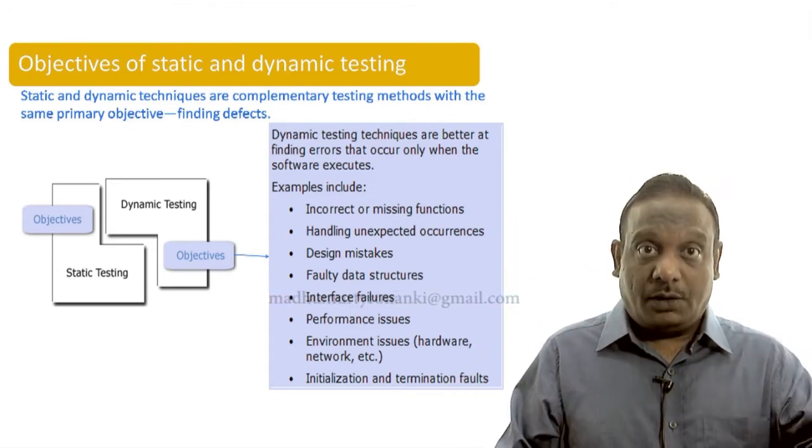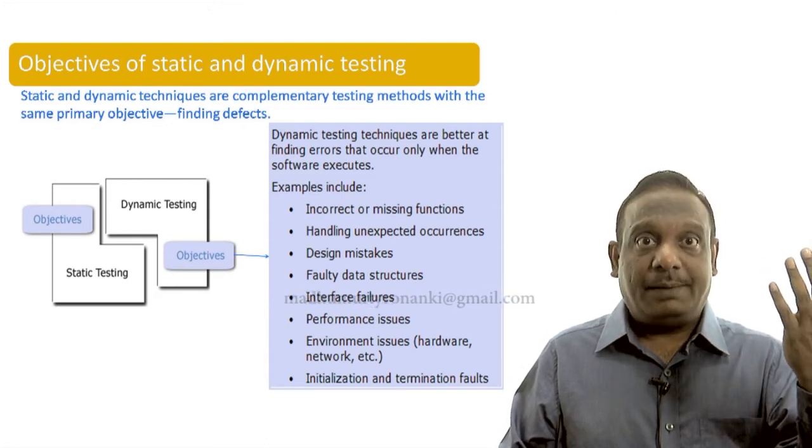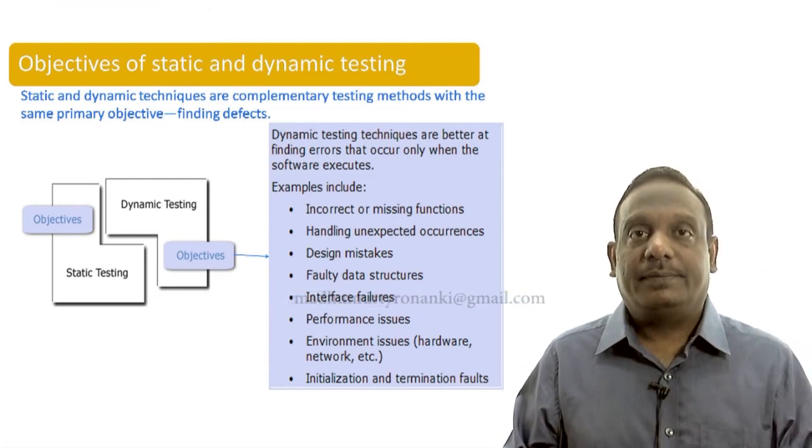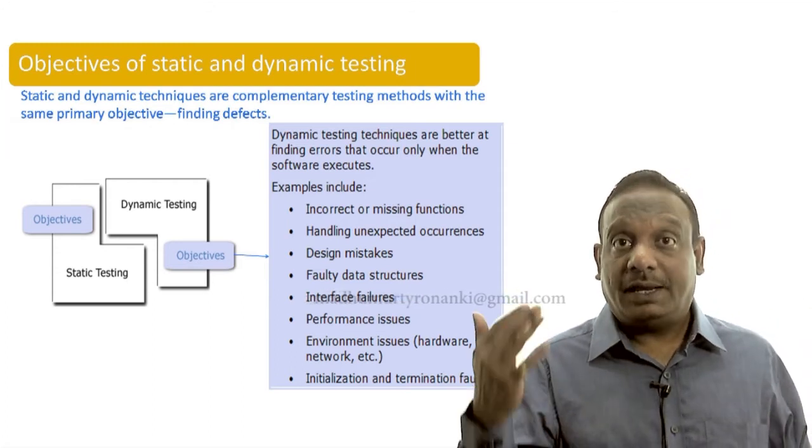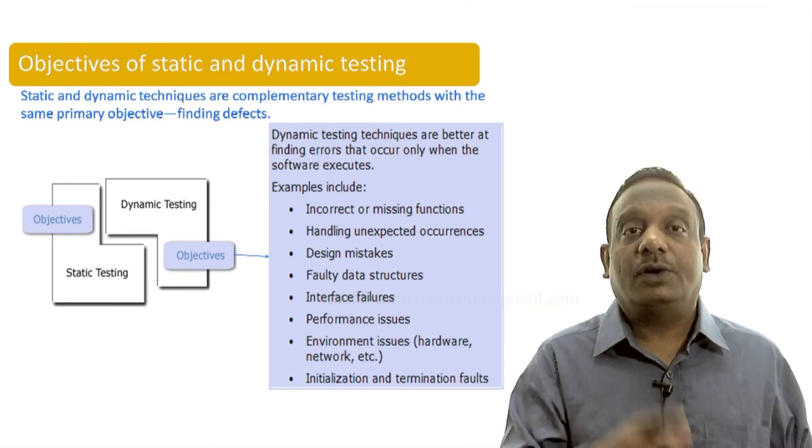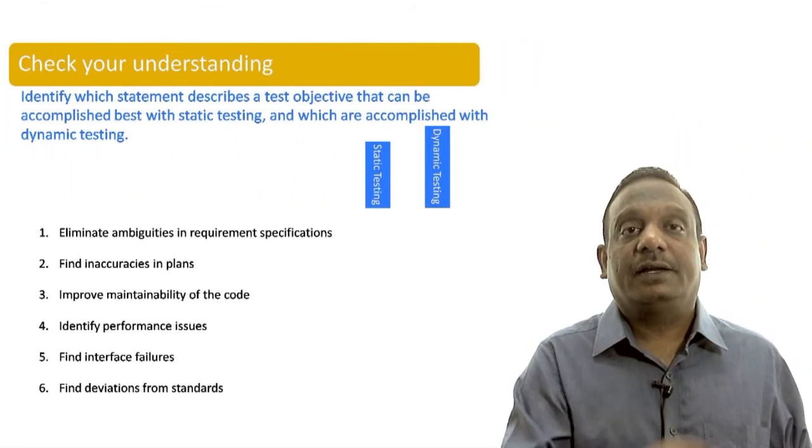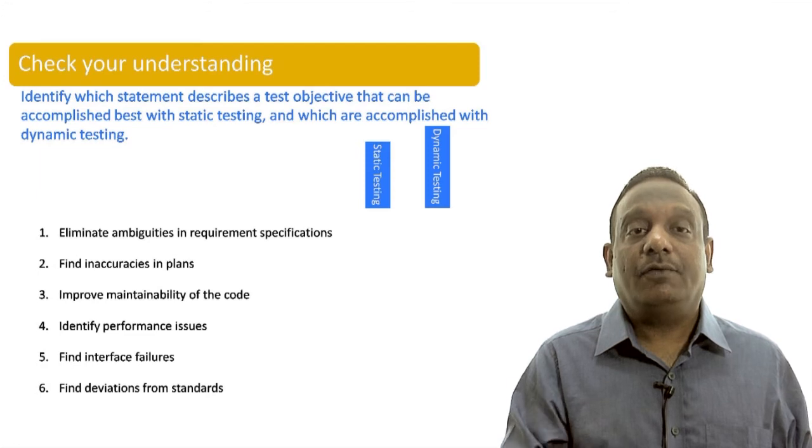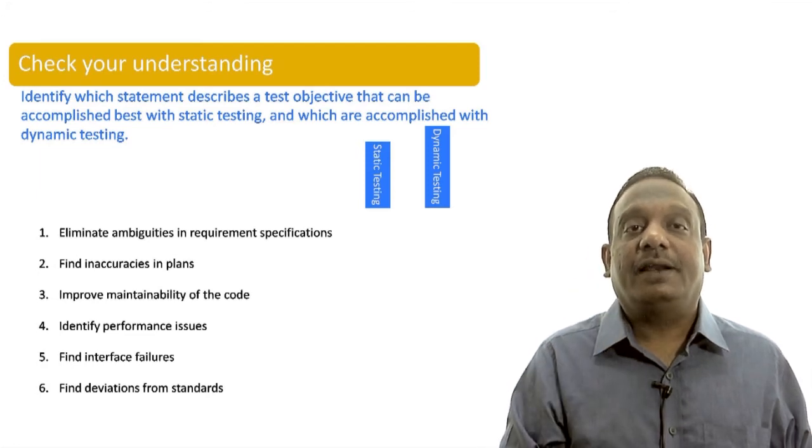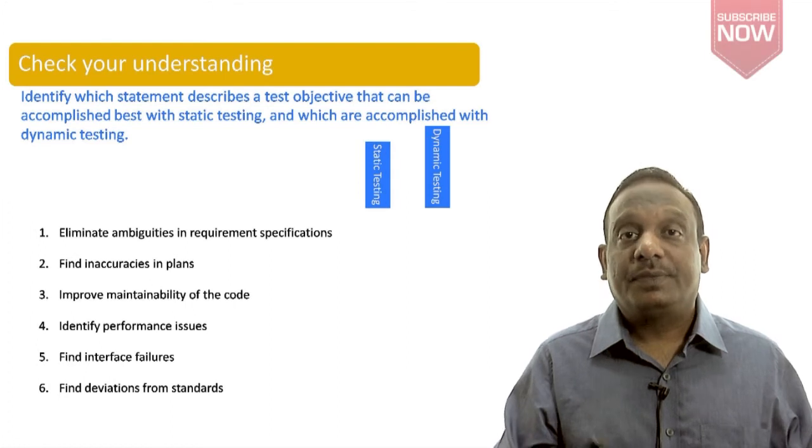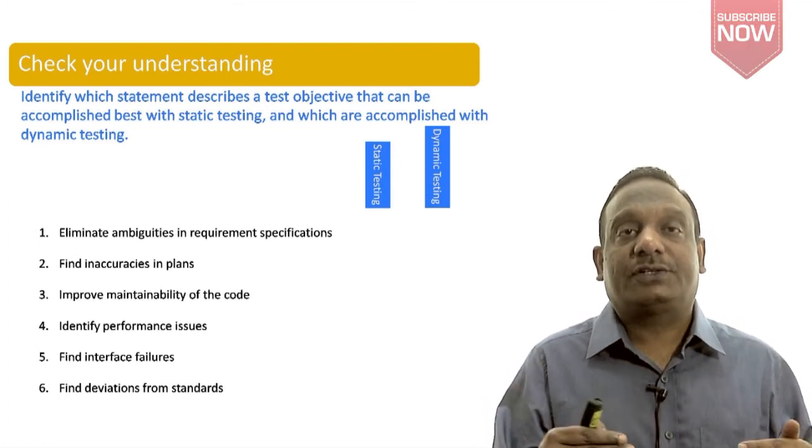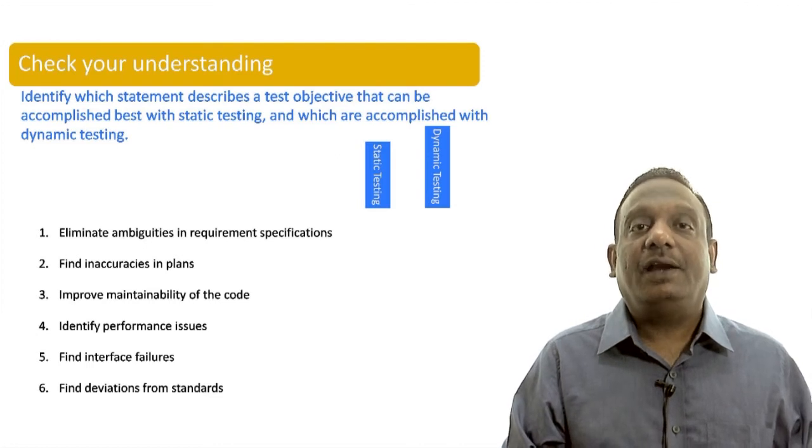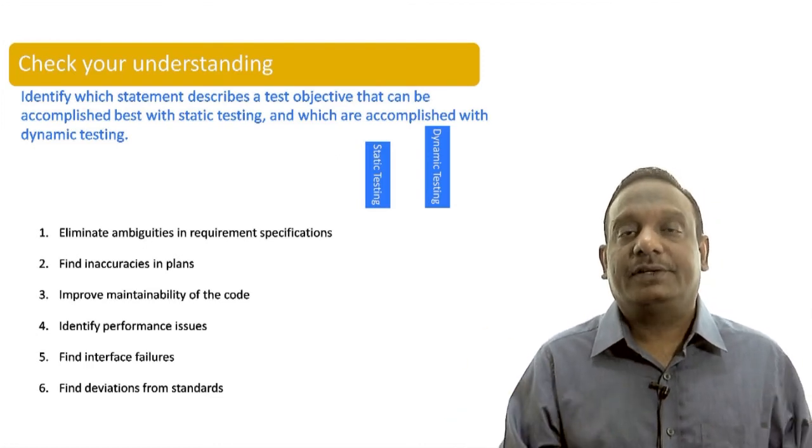Now we understood what are the type of problems that are found easily by static testing and what are the type of problems that are found by dynamic testing. Now let us pause and check your understanding. We have six statements there. You identify which statement describes a test objective that can be accomplished best with static testing and which are accomplished with dynamic testing.